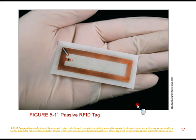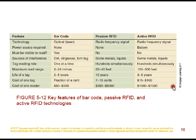Comparing tracking technologies: barcodes must be visible to be read, whereas both passive and active RFID do not require line of sight. Maximum read range is much shorter for barcodes than for passive RFID or active RFID. However, barcodes are significantly cheaper than either type of RFID.